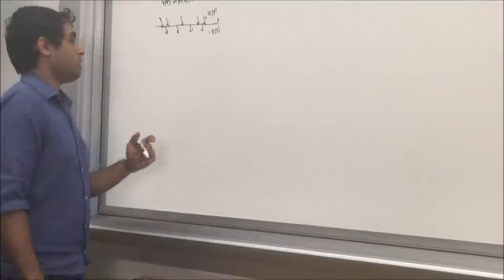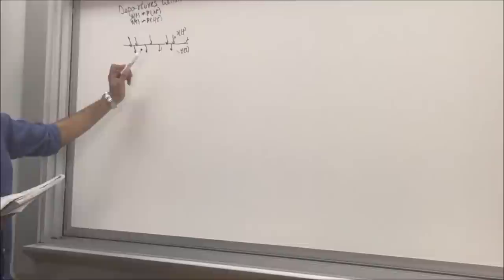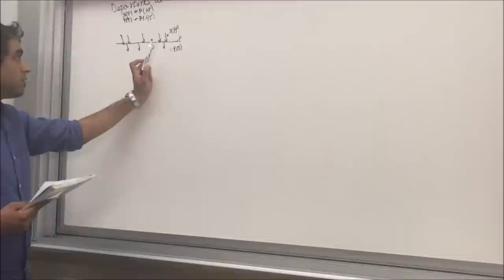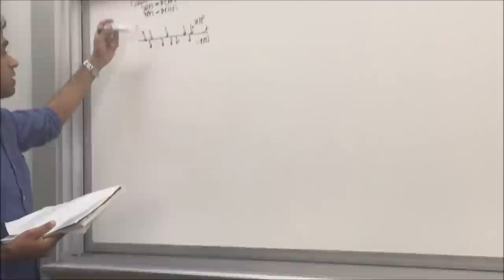We will be finding the density function of departures between two arrivals. Here we have two processes in the same time interval: one is the arrivals process denoted by X(t), and one is the departures process denoted by Y(t). Both these processes have different parameters lambda and mu.